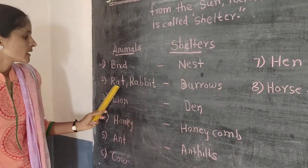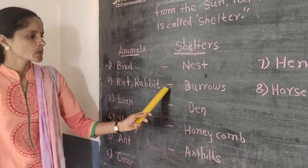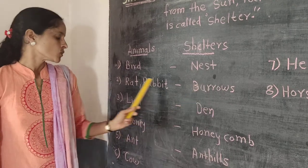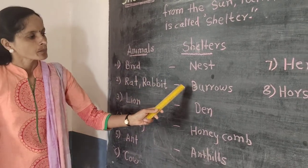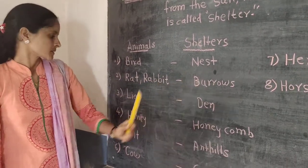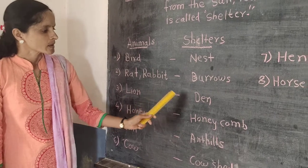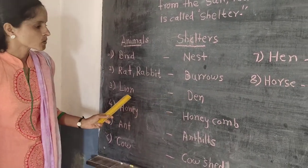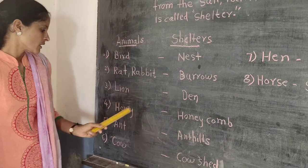Second, rat and rabbit. Their shelter is a burrow. In Marathi, undir and sashi, bilat ratat. Lion — shelter is den. In Marathi, siha kudratat gohet ratu.